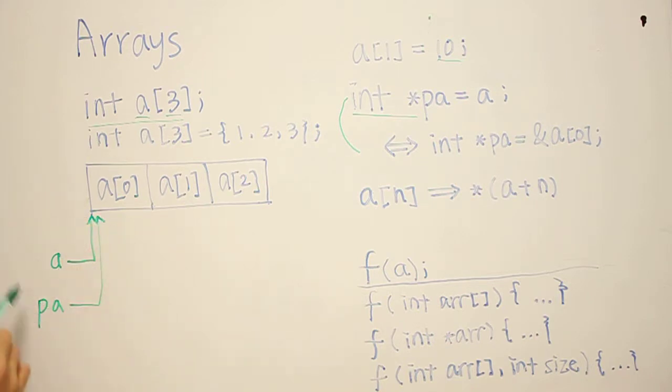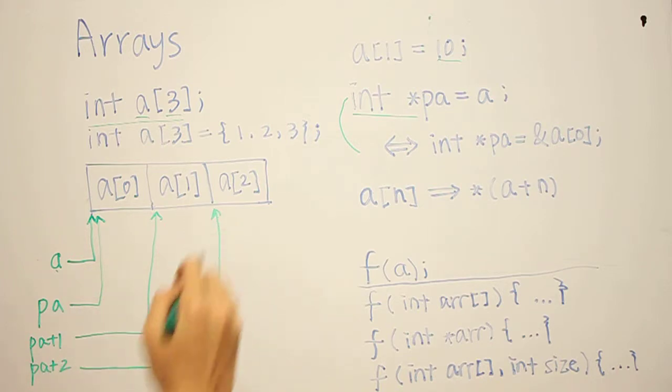So now basically A and PA, they're doing the same thing. Using pointer arithmetic, we can simply do PA plus 1. That will get us to the second element. And similarly, PA plus 2 will be pointing to the third element.